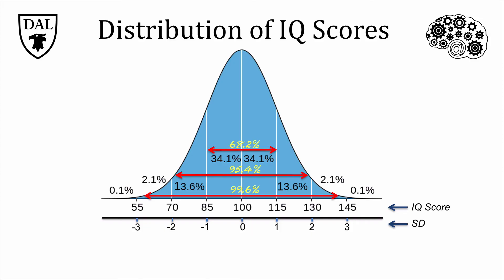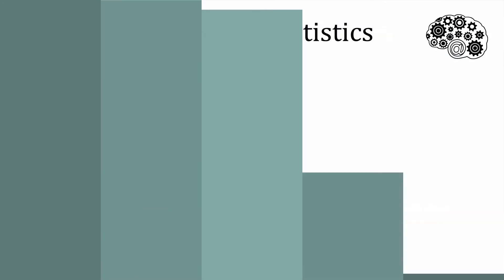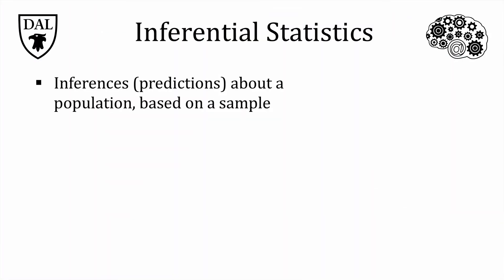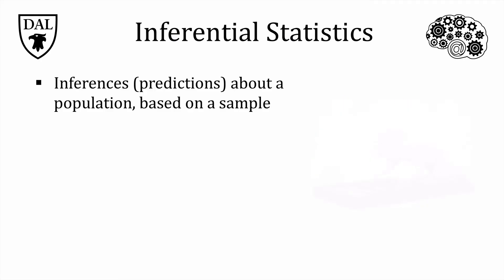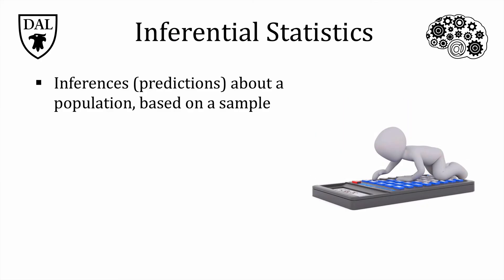So far we've focused on descriptive statistics, or displays of data. We can also use data to make inferences or conclusions, which is called inferential statistics. Inferential statistics allow us to make inferences, or predictions, about a population based on observations of a sample. The fact that inferential statistics enable predictions makes it very powerful, but these aren't crystal ball predictions — inferences are based upon mathematical calculations.